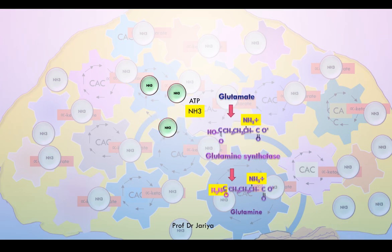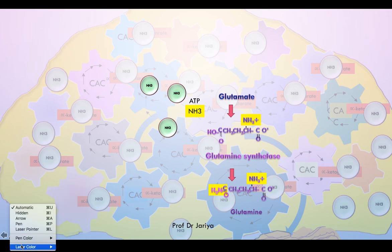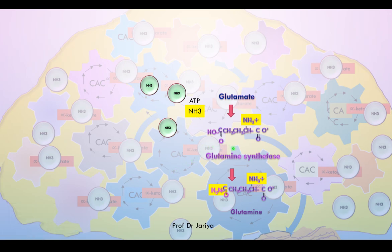Secondly, there is glutamate depletion. Glutamate in the presence of excess ammonia is converted into glutamine in the presence of glutamine synthase, as shown in this reaction. Glutamate is an excitatory neurotransmitter, and impairment of the glutamatergic transmission is responsible for adverse effects like lethargy and drowsiness. Conversion of glutamate to glutamine impairs glutamatergic transmission because glutamine is not a neurotransmitter.